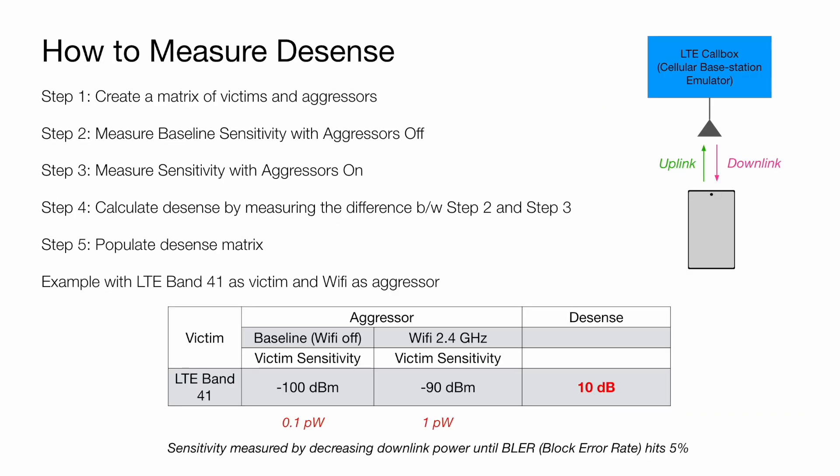Let's talk about how to measure desense. The first step is to create a matrix of victims and aggressors. In this example, the victim is LTE band 41 and the aggressor is Wi-Fi 2.4 GHz. We measure the baseline sensitivity for LTE band 41 with the aggressor off using a call box — a cellular base station emulator — connected to an antenna and a smartphone. You set up a phone call on the call box, measure the uplink and downlink power, start with high downlink power, and decrease it until you hit a block error rate of 5%.